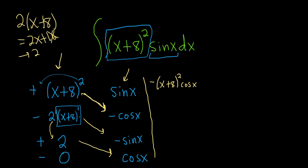Following the second arrow here, they're both negative, so it's going to be positive. So plus 2(x+8) sine x. And following the last arrow, plus 2 cosine x.